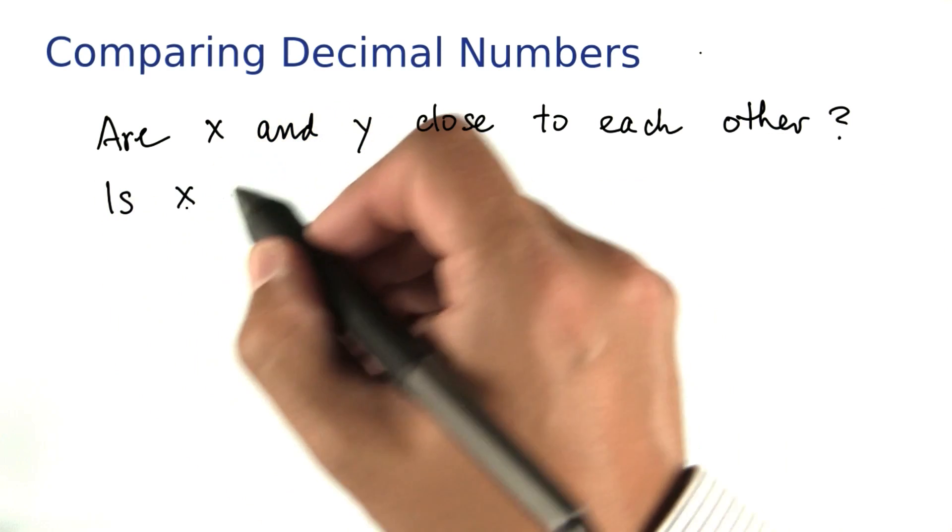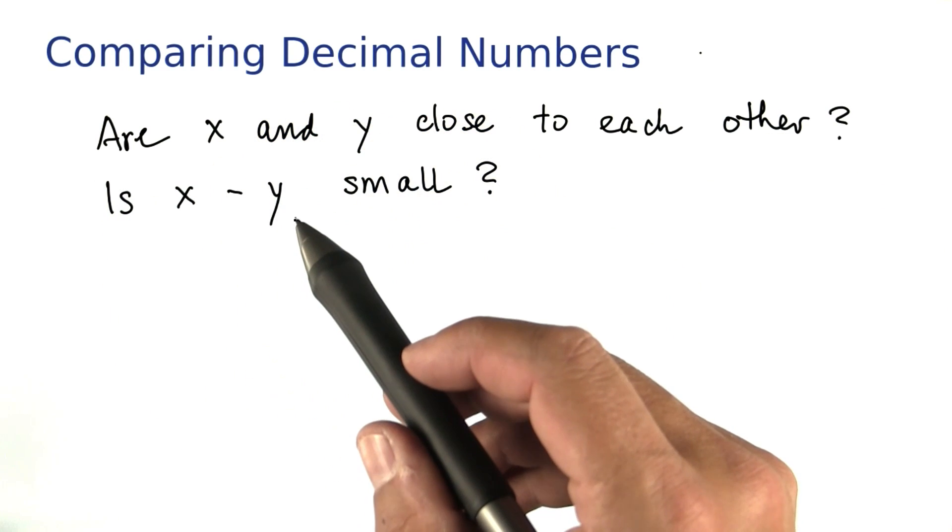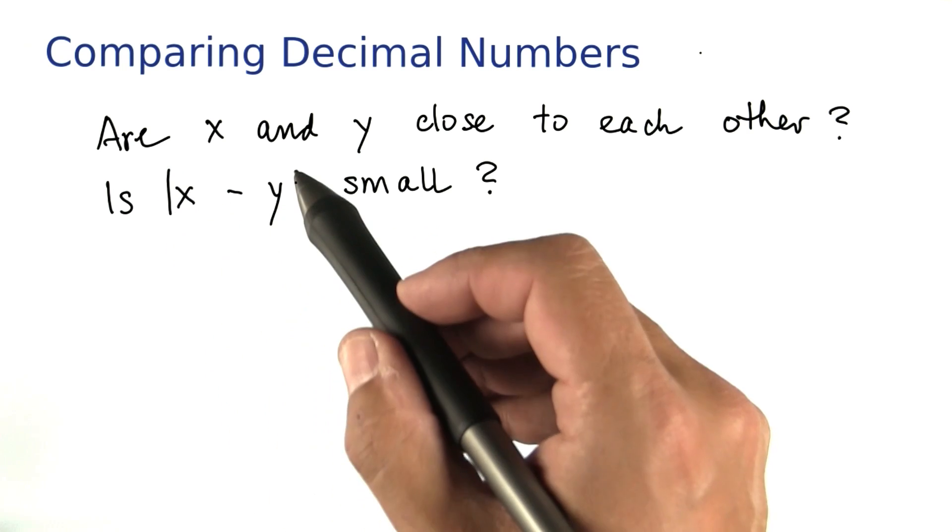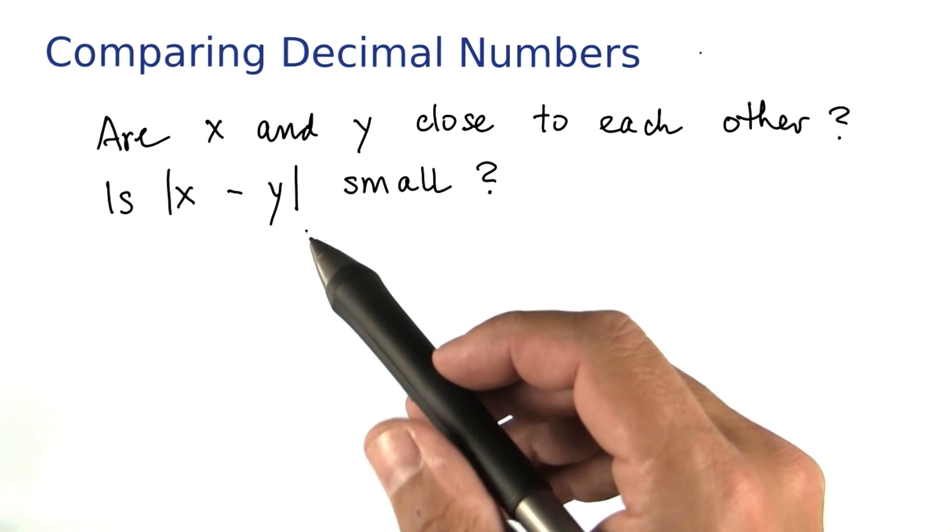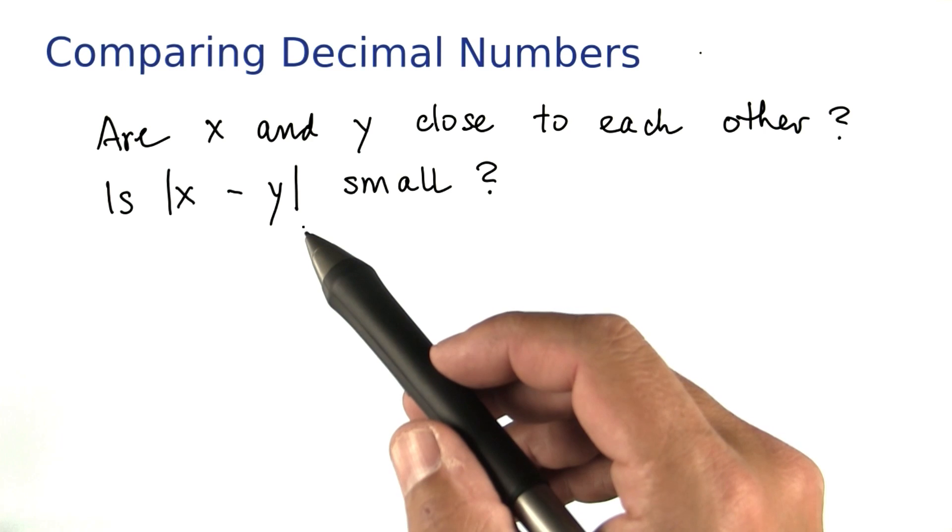In other words, is the difference small? Now we want to take the absolute value of the difference. We just care is that a small positive or negative value.